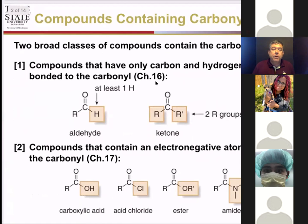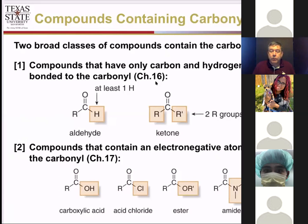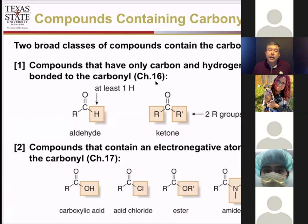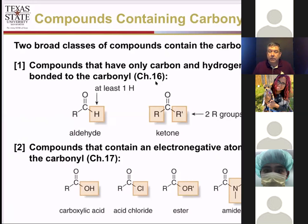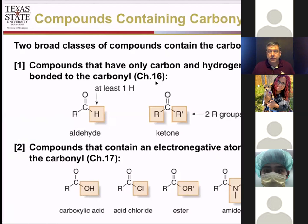In the last chapter, we talked about aldehydes and ketones. That's just one of the many classes of compounds that involve the carbonyl group — the C double bond O. We've talked about the structure of the C double bond O, its polarity, and some of its reactivity. The first two functional groups we looked at were the aldehyde and the ketone, where we had approximately the same electronegativity things bonded to the carbonyl. Those tend to be less reactive bonds, or they tend to be non-polar bonds.